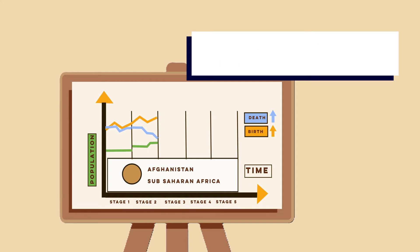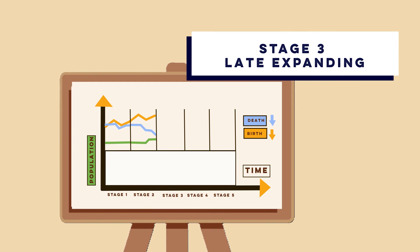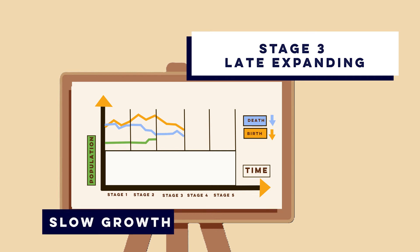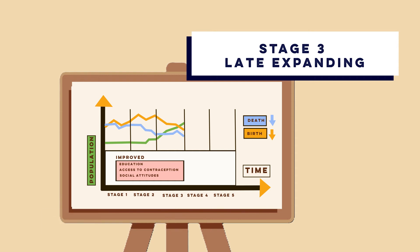Stage 3 is late expanding. Birth rates start to decline and death rates remain low, leading to a slower population growth. This is because improved education, access to contraception and changing social attitudes mean people may choose to have fewer children. We likely see this in newly emerging economies such as India, Mexico and Brazil.